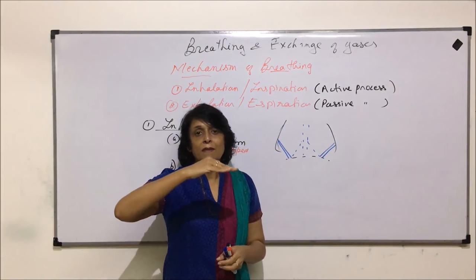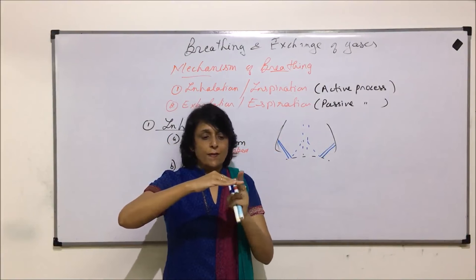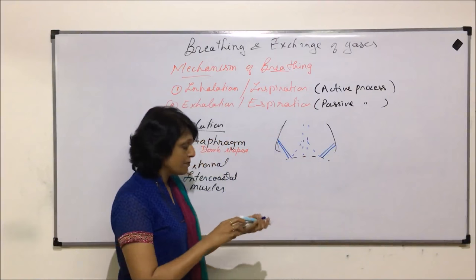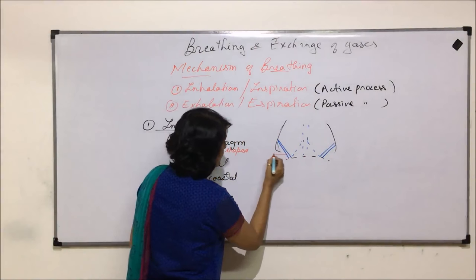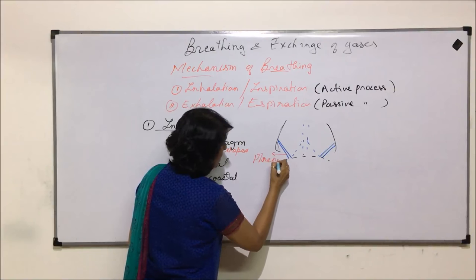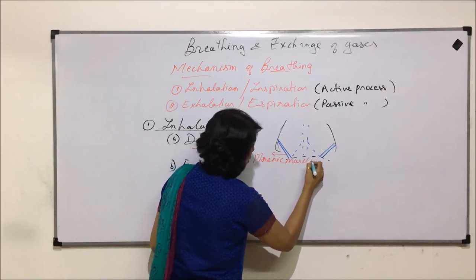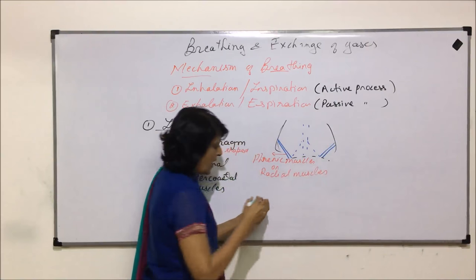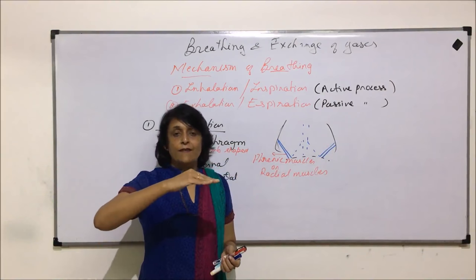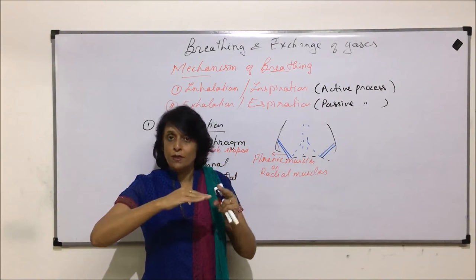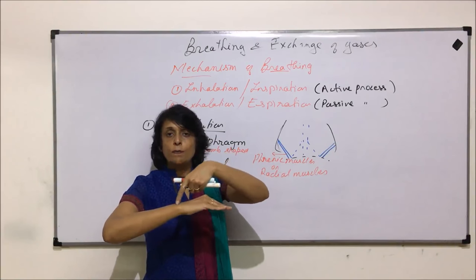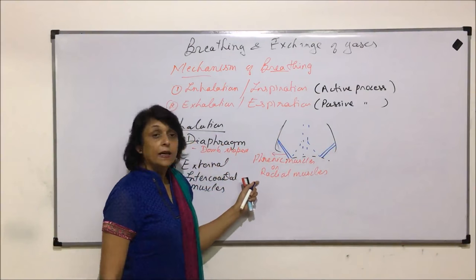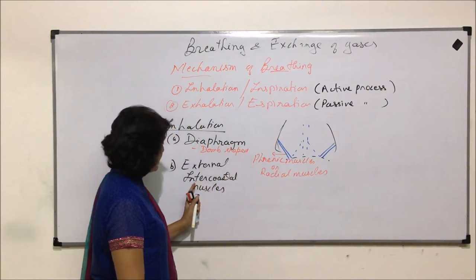The diaphragm is like a disc or ring, and all along its periphery there are muscles attached to the sides of the diaphragm and the rib cage. If the diaphragm is imagined as a sheet, and these peripheral muscles contract, they pull the diaphragm and it becomes flat. These muscles are known as phrenic muscles or radial muscles, and they are attached all along the periphery of the diaphragm and to the rib cage.